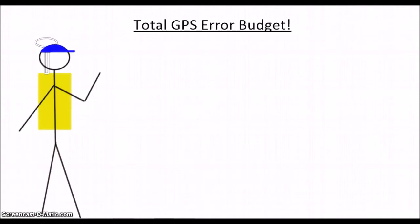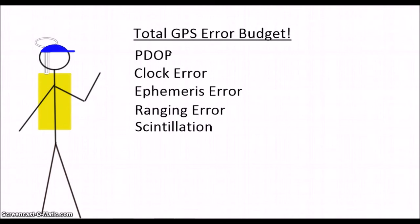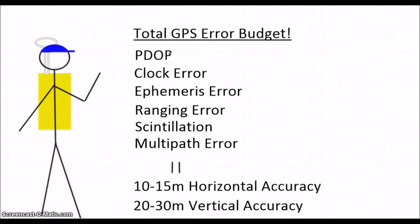Finally, we can get an idea of our total GPS error budget. By combining all of the things we just discussed with your p.value, you can get an idea of how accurate your positioning really is, which for GPS is about 10 to 15 meters in the horizontal, and roughly twice that in the vertical.